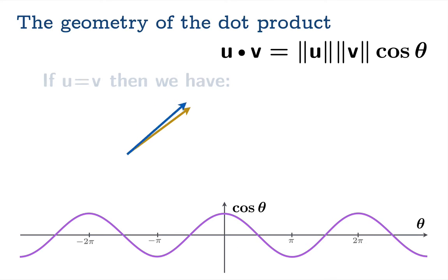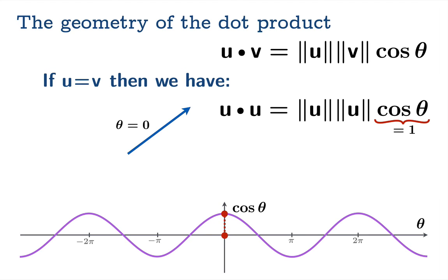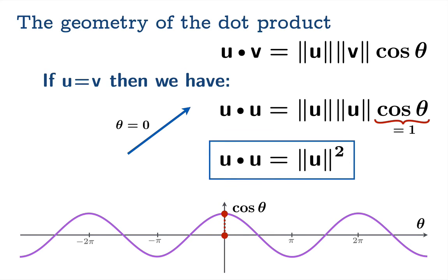Returning to the special case where u equals v: the formula gives u·u = ||u||²·cos(0) = ||u||², since θ = 0 and cos(0) = 1. We recover the formula we saw earlier: u·u is the square of the norm of u.